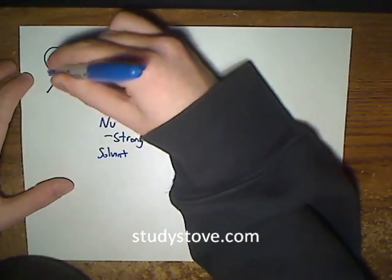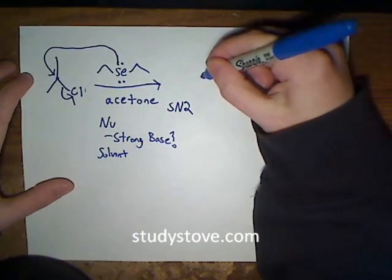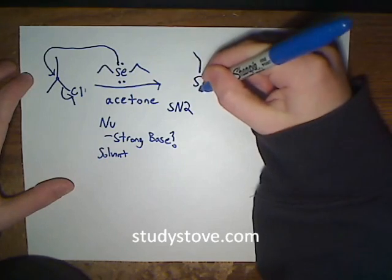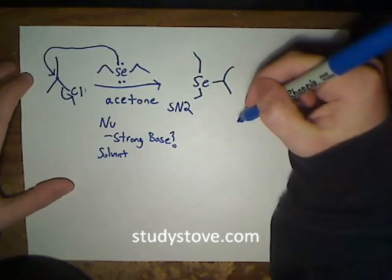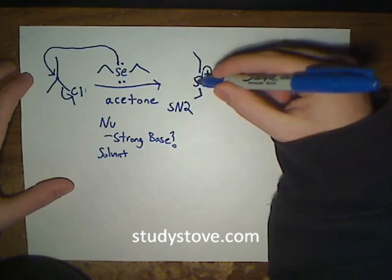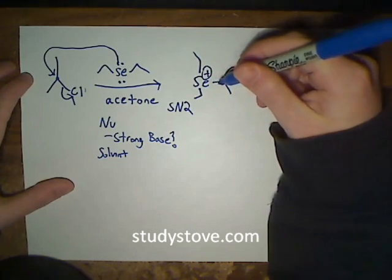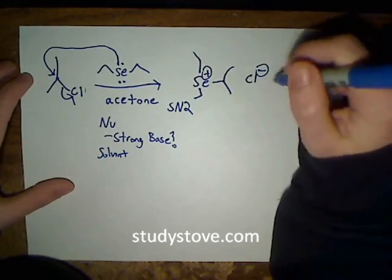You have a backside attack, then you kick off the chloride ion, and that gives us this as a product attached to propyl. We now have a positive charge on the selenium atom. I'll also draw the counterion, and this would be our major product for this reaction.